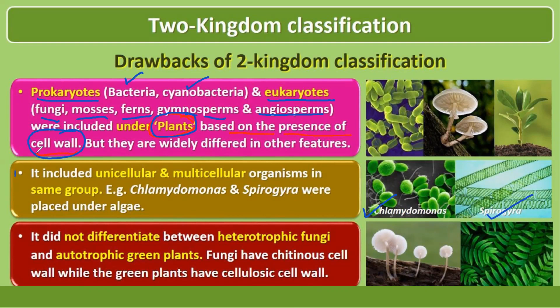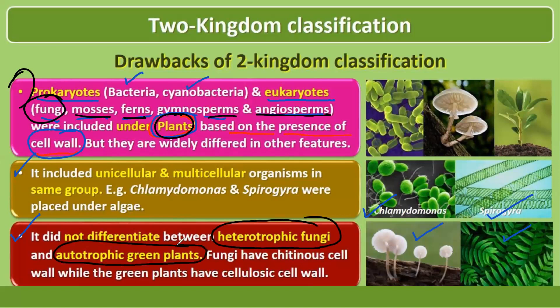The third drawback is that it did not differentiate between heterotrophic fungi and autotrophic plants. Fungi and plants like angiosperms, gymnosperms, ferns and mosses were kept under the same group, which is not acceptable since they are totally different organisms with different characteristics.